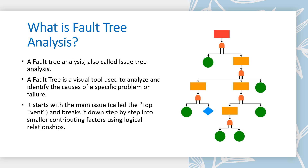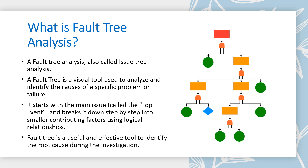A fault tree starts with the main issue known as the top event and breaks it down step-by-step into smaller contributing factors using logical relationships. As you can see in the picture, at the top is your problem statement, which you then break down into possible causes. Fault tree is a useful and effective tool to identify root cause during an investigation. By mapping out possible failure paths, it provides a clear visual representation of contributing factors, helping to pinpoint the exact cause and prevent future occurrences.